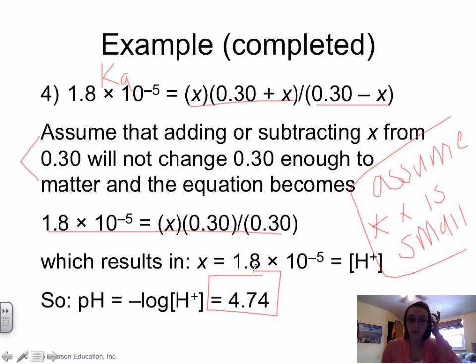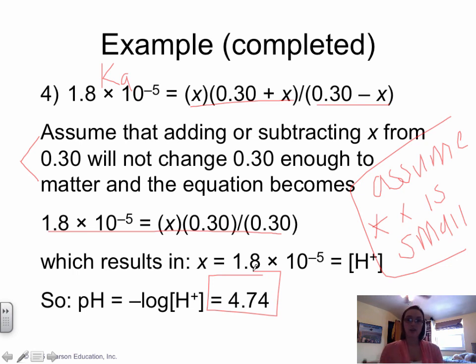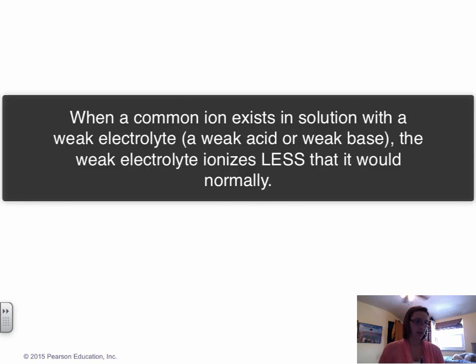If you were to calculate the pH without the common ion, you'd find it would be more acidic — a lower pH. But when you add a common ion, it reduces the H+ concentration and raises the pH, because the acetic acid does not ionize as much. That is probably the most important statement from this entire video: when you have a common ion, the weak acid or weak base will not ionize as much. For a weak acid, this reduces H+ and raises the pH. If you still have questions on the common ion effect, bring them to class, read 17.1 in your book, and we'll do more practice problems.